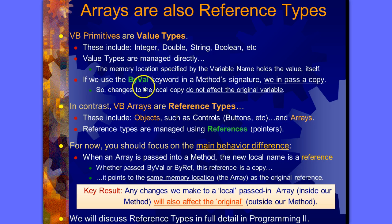If we use the byVal keyword in a method's signature, we pass a copy. So changes to the local copy do not affect the original variable. When we make changes within the method, the subroutine, or function, we don't actually make changes to the original value stored in that memory location.